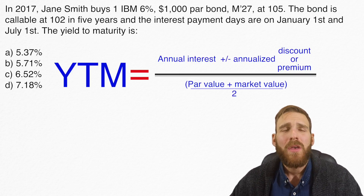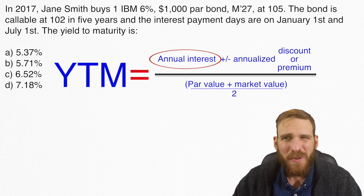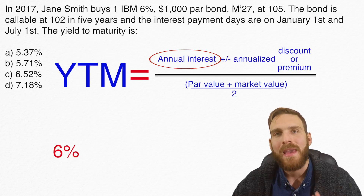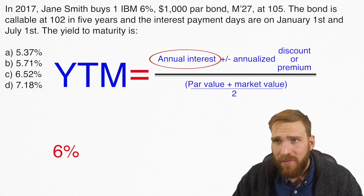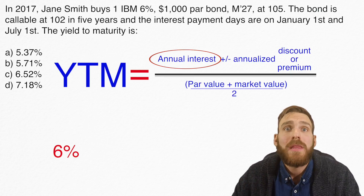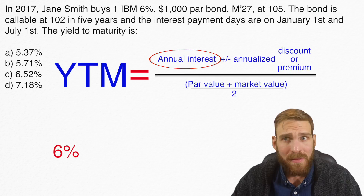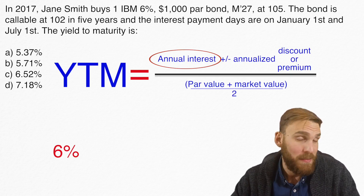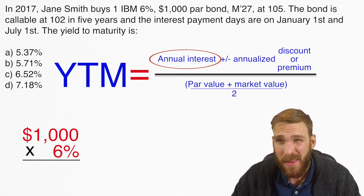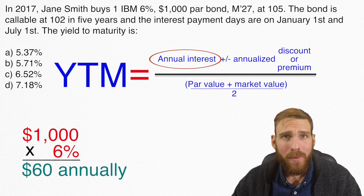We need our annual interest payment. Jane buys one IBM 6% $1,000 par bond. That 6% is all you need to determine how much you get from your bond interest-wise every year. Every question they give you in terms of bonds, the first percentage they provide is always the coupon or nominal rate. It tells you the issuer is going to pay you that much money based on par every single year. So 6% of par, which is $1,000 — this bond is paying $60 a year to whoever owns the bond. We put that $60 in there.